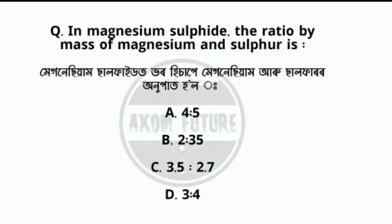Question: in magnesium sulfide, what is the ratio by mass of magnesium and sulfur? The answer is 3 is to 4.